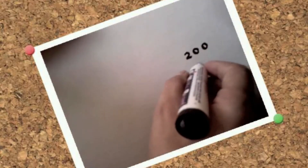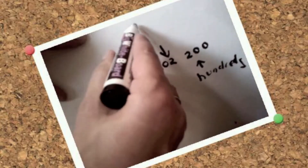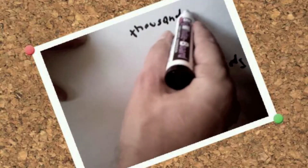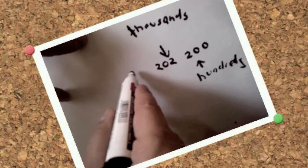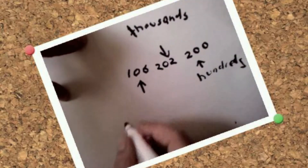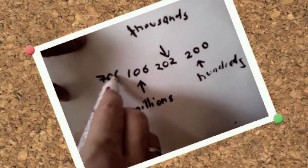We divide our numbers in English into groups of three. The hundreds — so that would be 200. The next group of three is the thousands, so 202,200. The next group is the millions, so 106,202,200.